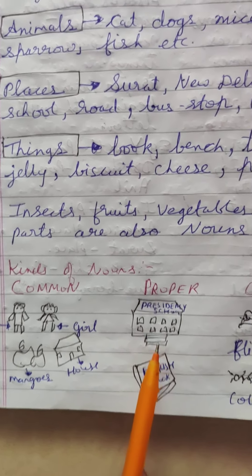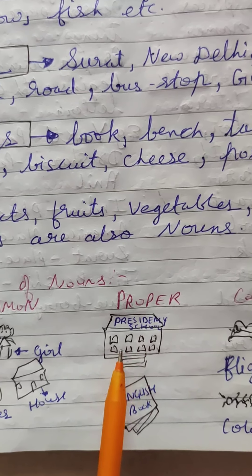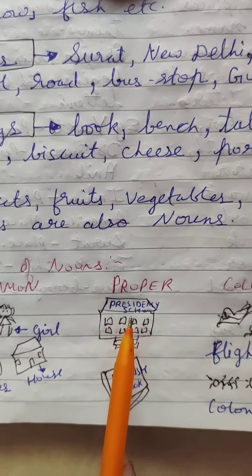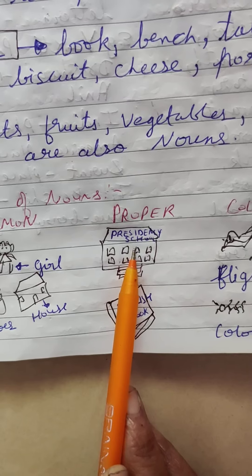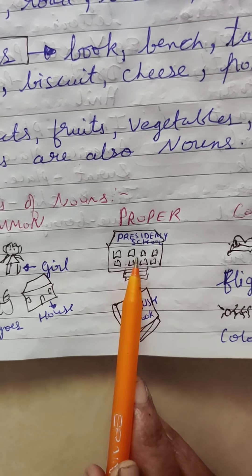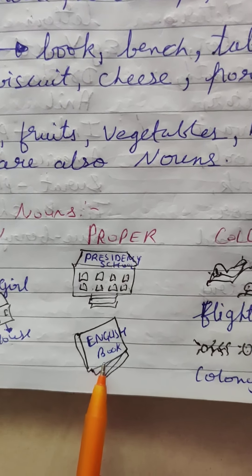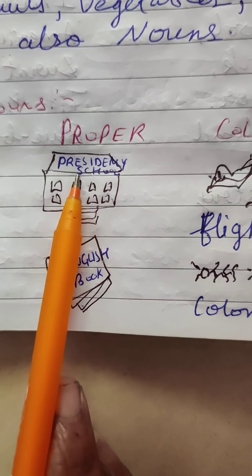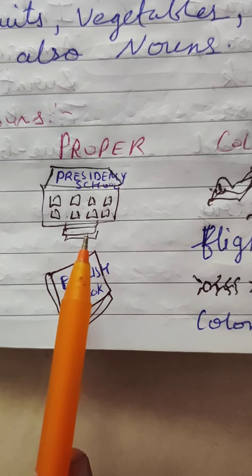Now here are pictures of proper noun. A school picture is there, but the school name is particularly given to the school - Presidency school. Presidency is a proper noun. It starts with a capital letter. Proper noun starts with capital letters. And a book picture is there - can you see which book? English. So Presidency and English are proper nouns.